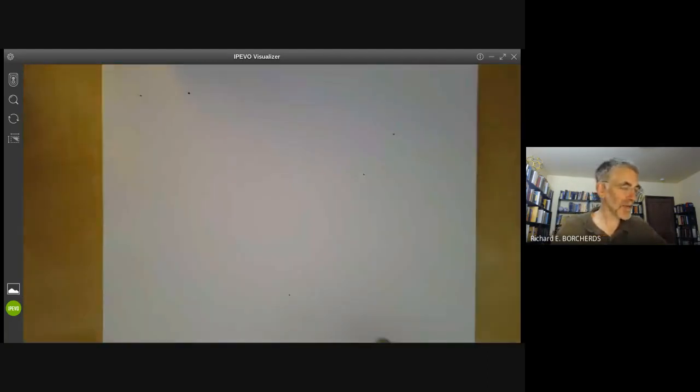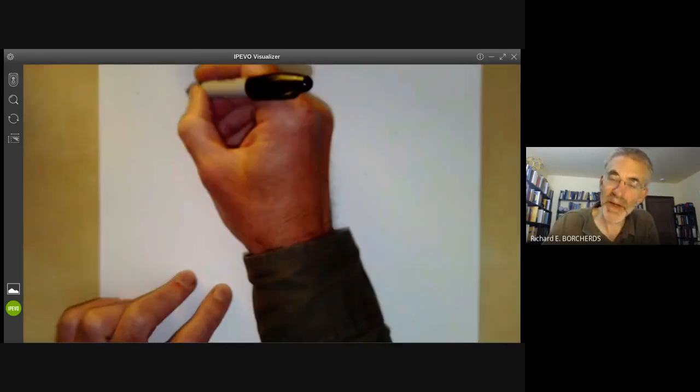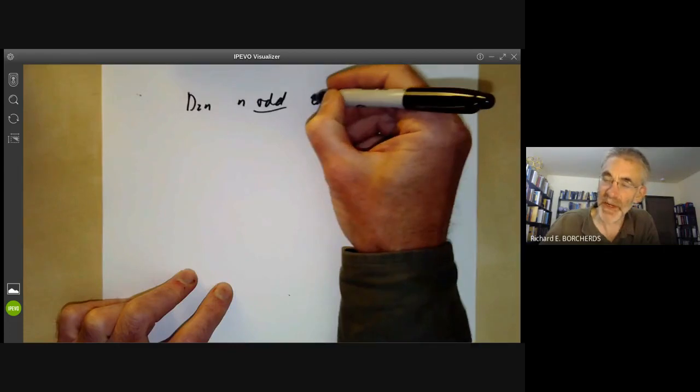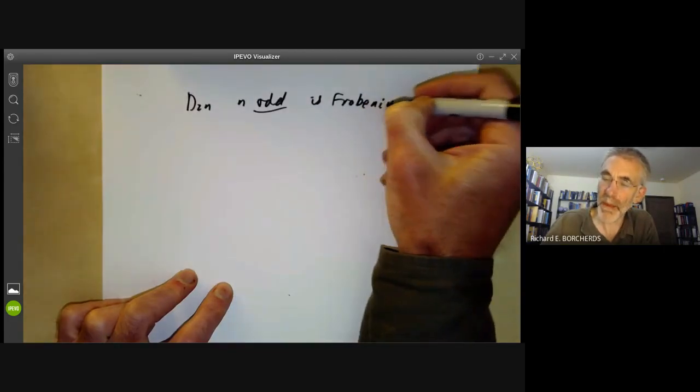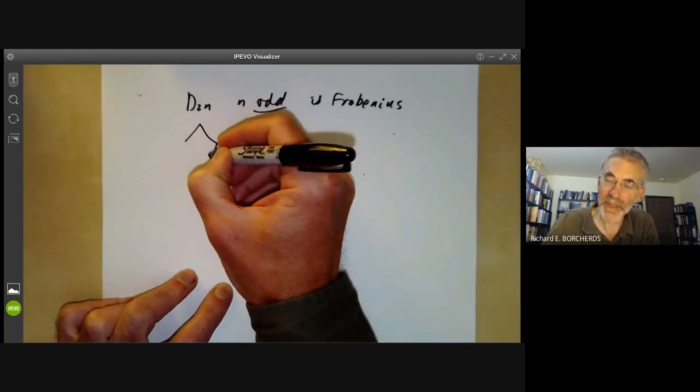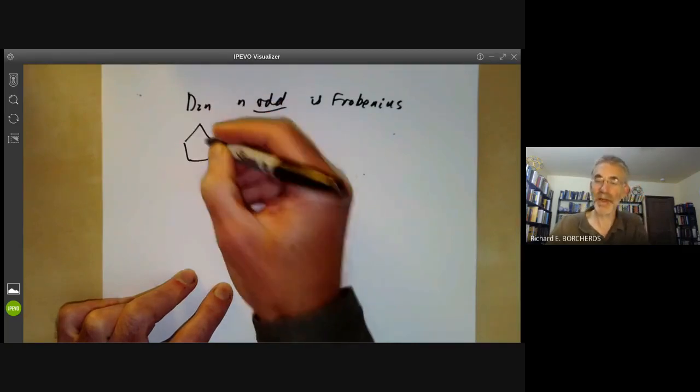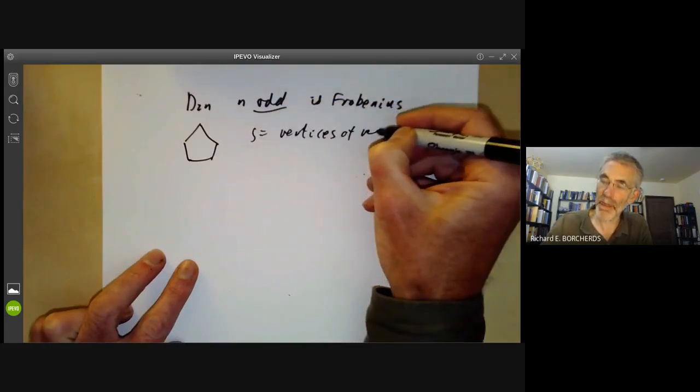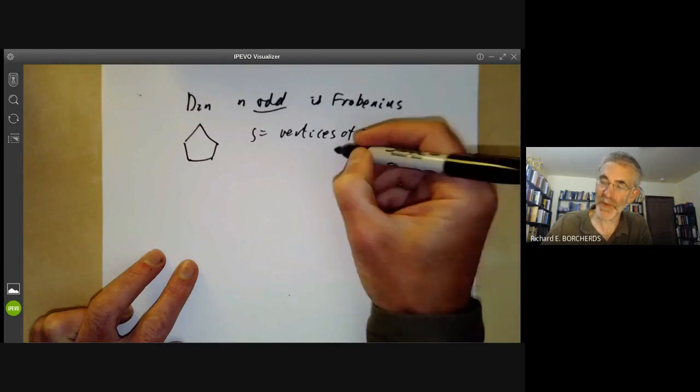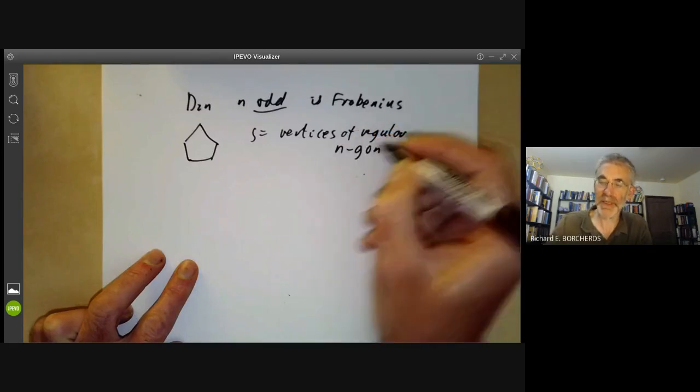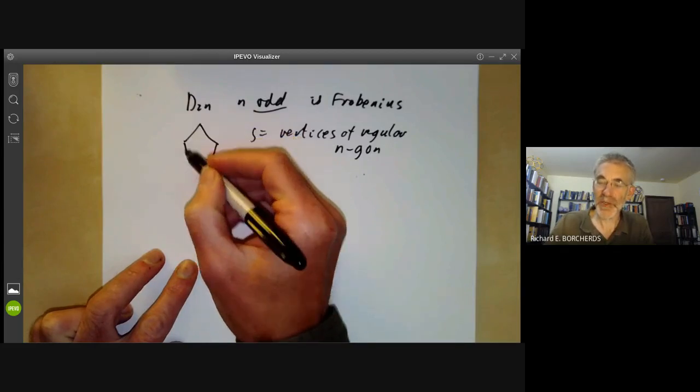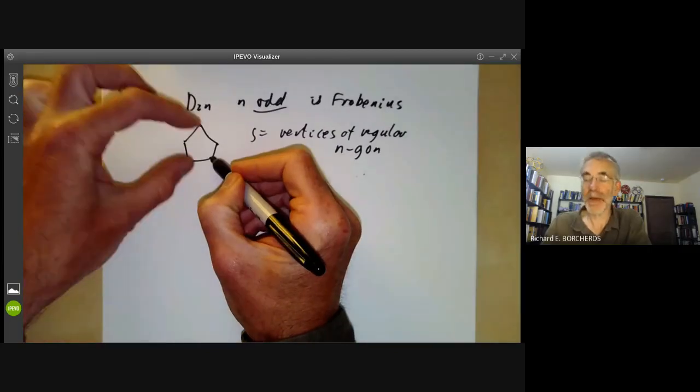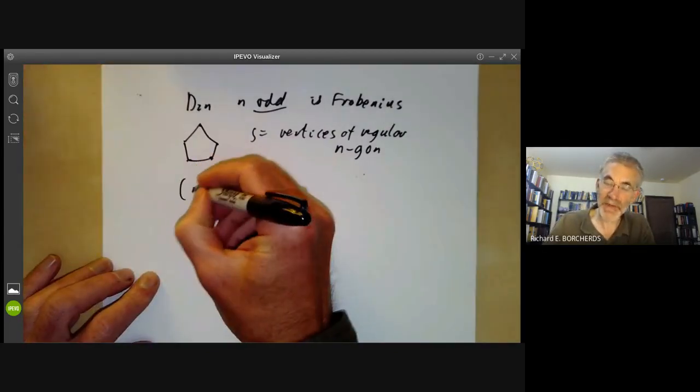There've also been several other examples of Frobenius groups. If we take the dihedral group Dn for n odd, this is a Frobenius group. For instance, if we take D10, it's the group of automorphisms of a pentagon. And the set S is just the vertices of a regular pentagon, or n-gon, a pentagon in this case, because the dihedral group acts transitively on the vertices. But if you fix two vertices, then that determines everything. If n is even, this fails.